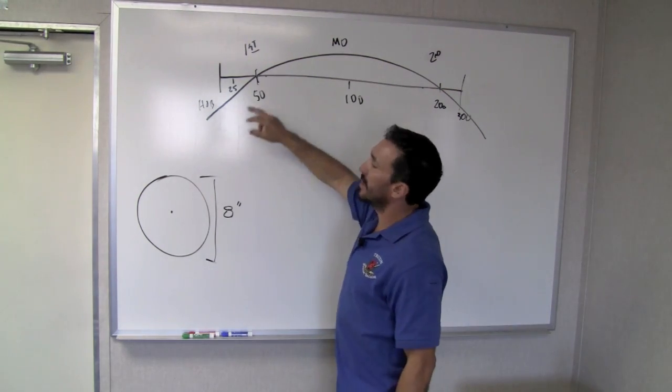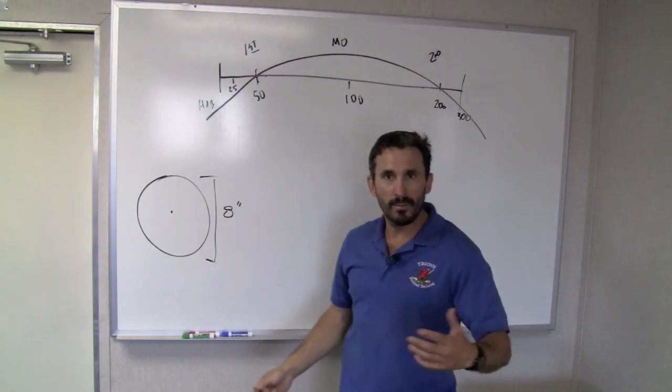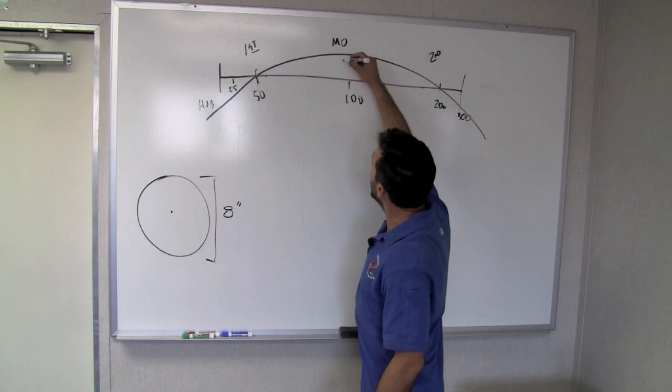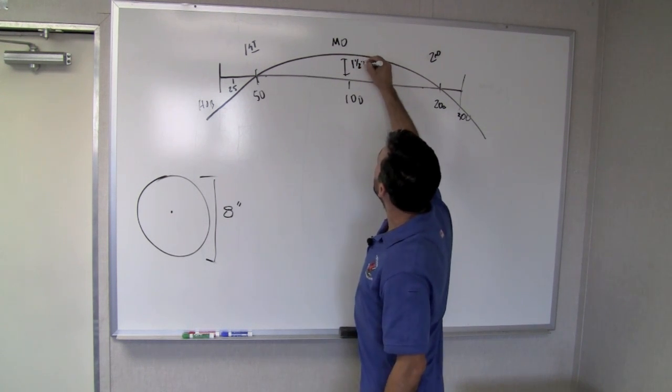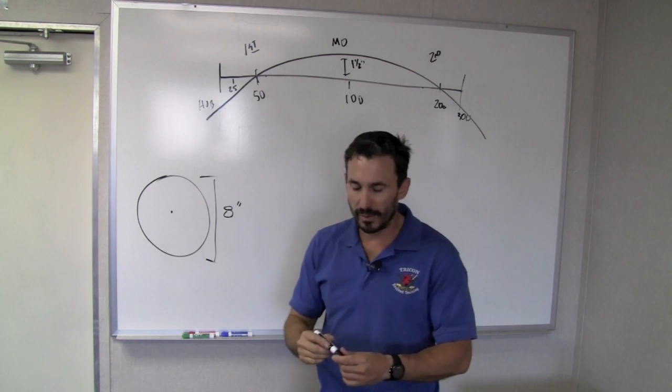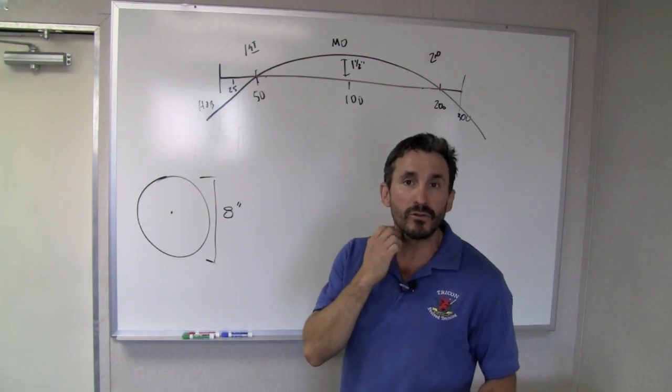Now, as that bullet continues to climb, it's going to reach the apex of that arc, which we call maximum ordinate. In this case, it's going to be about, well, let's say about one and a half inches, thereabouts. They vary depending on what the specifics of the zero are that you're using.